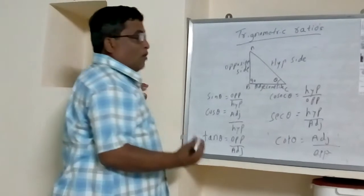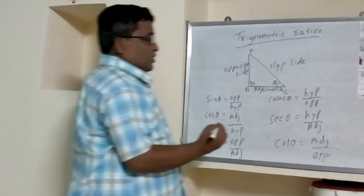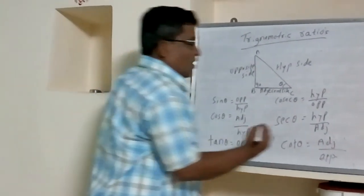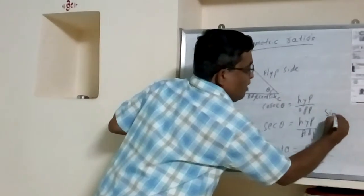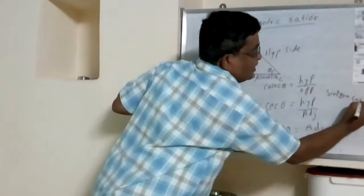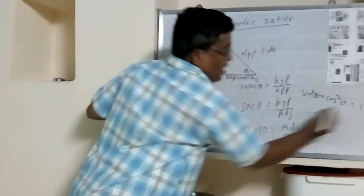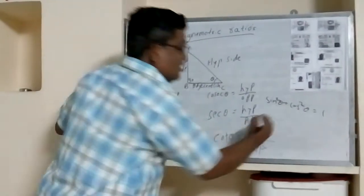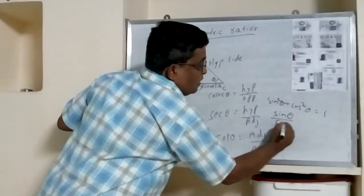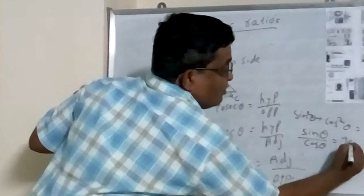Here are 6 formulas to understand. Sin²θ + cos²θ = 1. Then sin θ by cos θ equals tan θ.